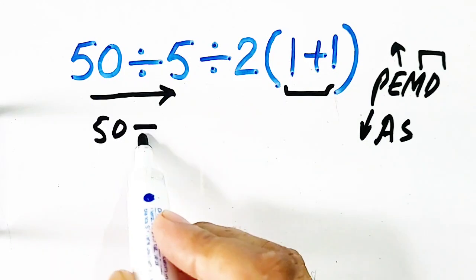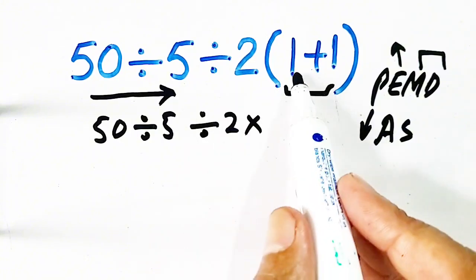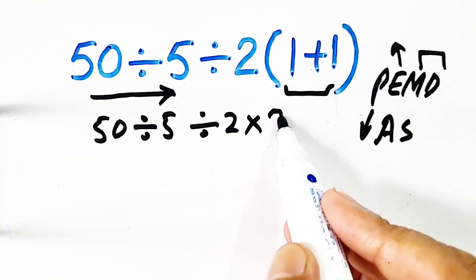So, 50 divided by 5 divided by 2 times 1 plus 1, it will be 2.